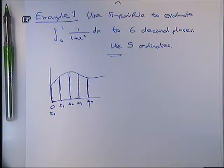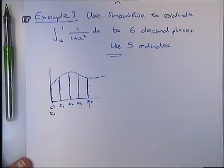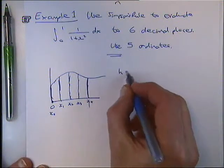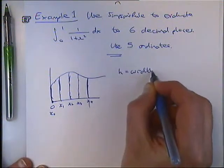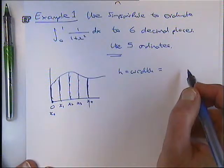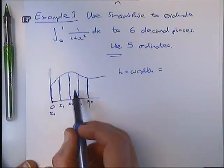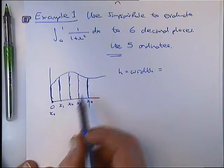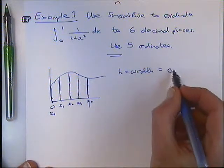What will the width of each of those strips be? No need to use that formula. Just look at it and think. We've got 1, 2, 3, 4 strips. 0.25, yeah.